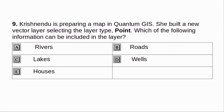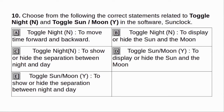Krishnendu is preparing a map in Quantum GIS. She built a new vector layer, selecting the layer type point. Which of the following information can be included in the layer? A. Rivers. B. Roads. C. Lakes. D. Wells. E. Houses. Answer: D and E.